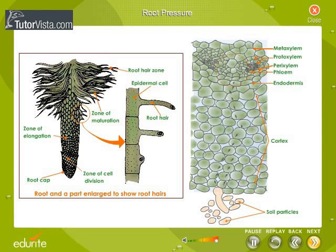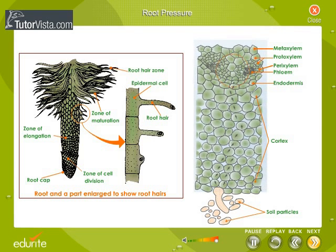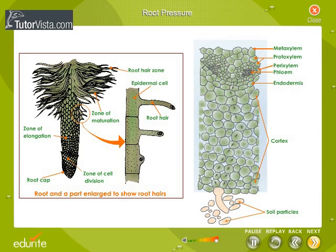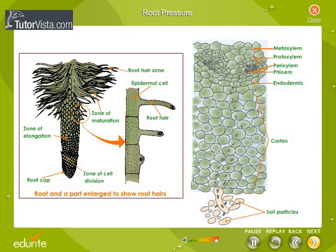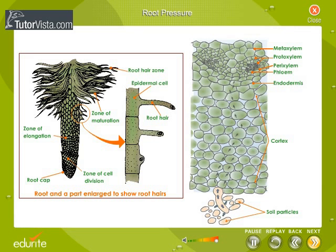The cortical cells then become flaccid, they again absorb water and become turgid, and the same process continues. Thus an intermittent pumping action goes on in the cortex of the root, giving rise to considerable pressure. As a result of this pressure, water is forced into the xylem vessels.